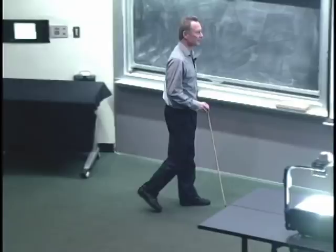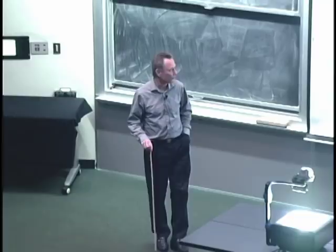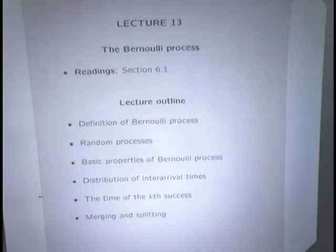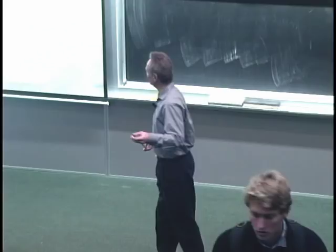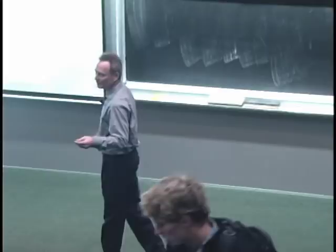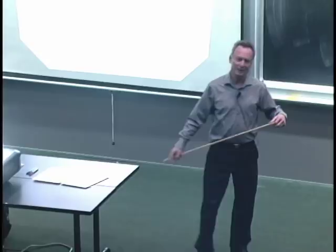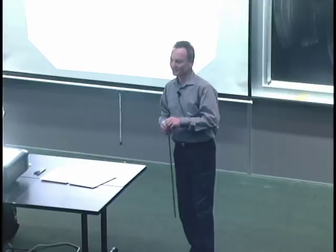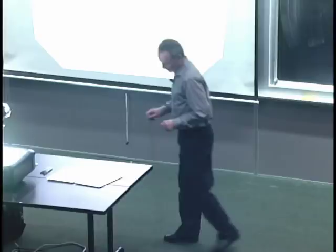We're going to define the Bernoulli process, talk about some basic properties, derive a few formulas, and exploit the special structure it has. By the way, where does the word Bernoulli come from? The Bernoullis were a family of mathematicians and scientists around the 1700s. There were so many of them — and some had the same first name — that historians even have difficulty figuring out who exactly did what. You can imagine that at the dinner table, they were probably flipping coins and doing Bernoulli trials.